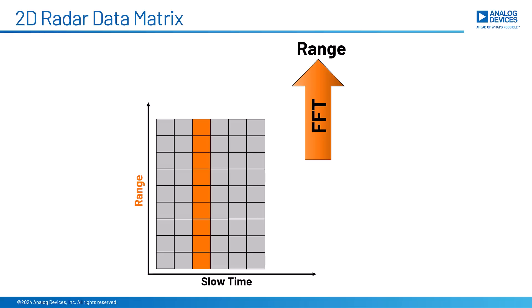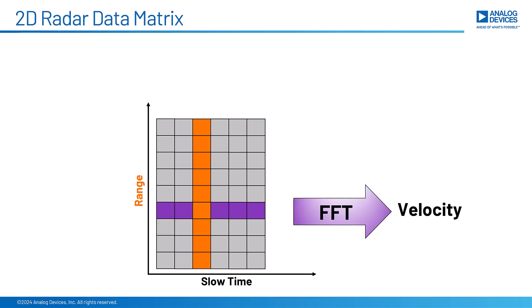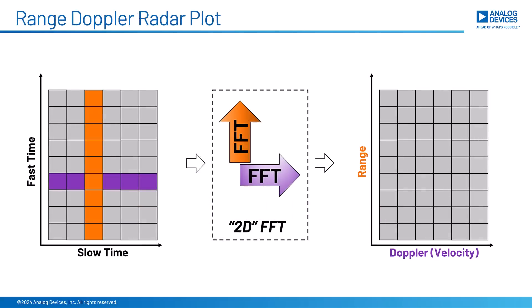So to get velocity, we take another FFT, but this time we go across the columns. And in radar terms, we call that velocity Doppler. And we can do both of these FFTs in one fell swoop by using a function called the two-dimensional FFT. This function exists in Python or MATLAB or whatever, and it just generates this transformation very cleanly.